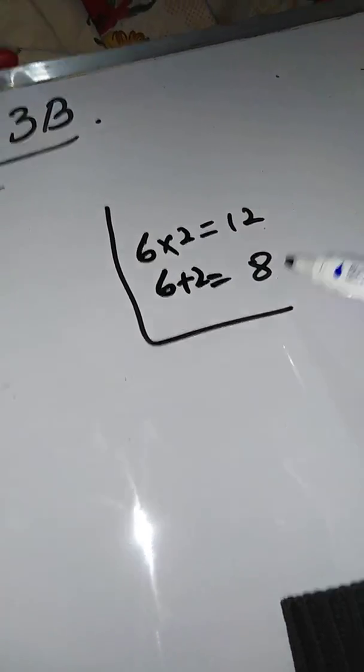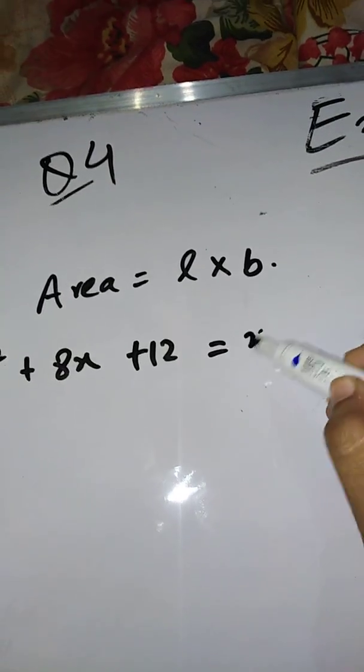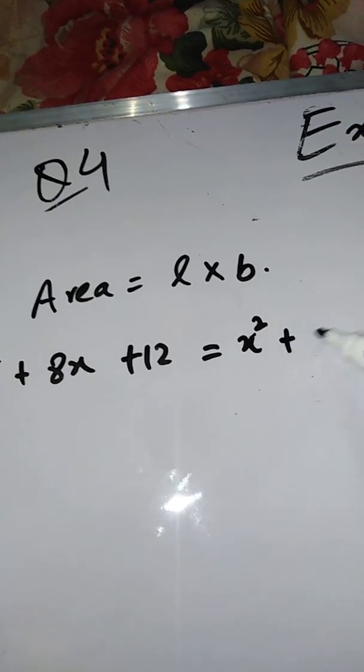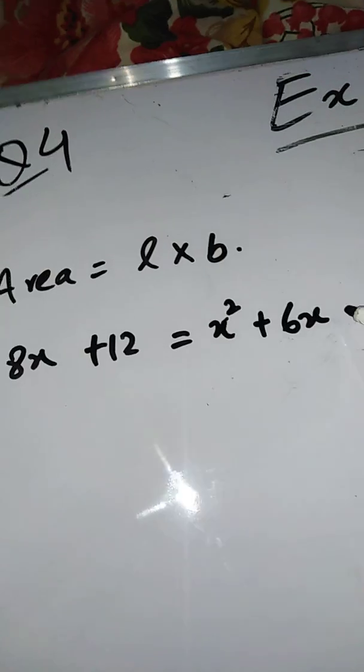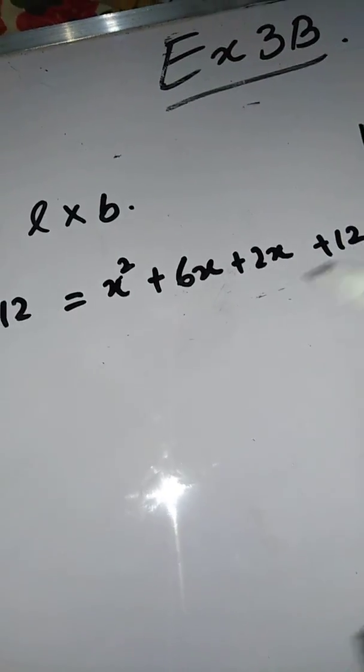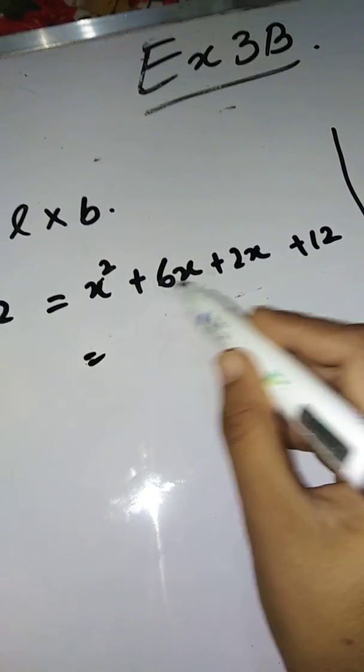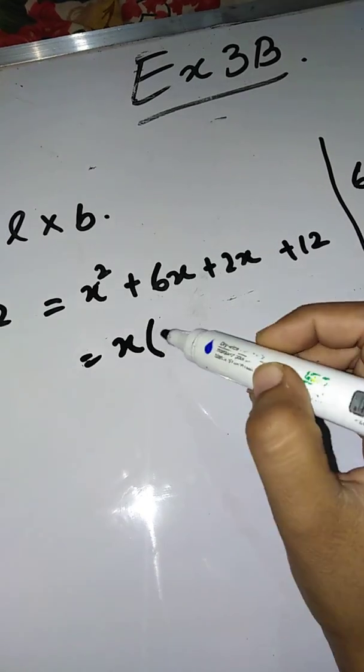Write the first term as it is. In place of the middle term, write two factors. Instead of 8x, write 6x + 2x. Now write the last term as it is. See what's common in these two terms. Here x is common. x² divided by x leaves x, and 6x divided by x leaves 6. So x(x + 6).